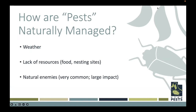If we think of any pest insect, these pests can be managed in many different ways, and this often happens naturally. Things like weather, lack of resources like food and nesting sites — those are factors that help keep pest populations down. But natural enemies are very abundant, and they have a massive impact on the populations of other insects, many of which are pests. We often say that every insect out there probably has at least one natural enemy, and some have many.